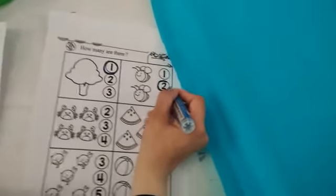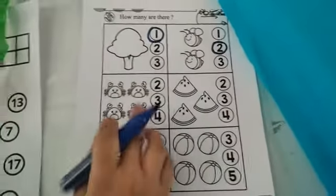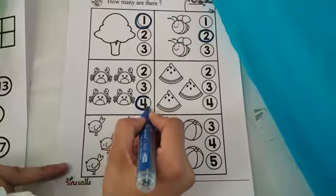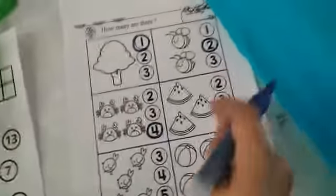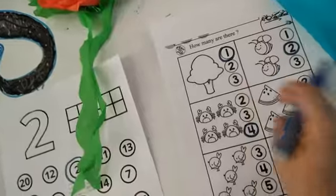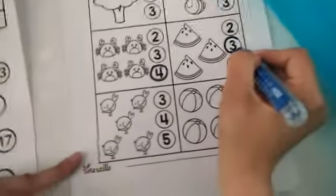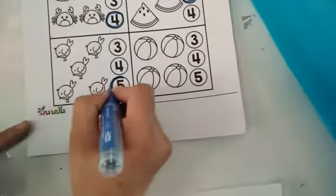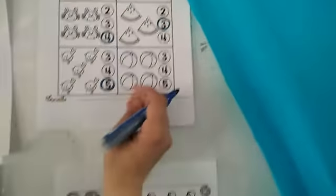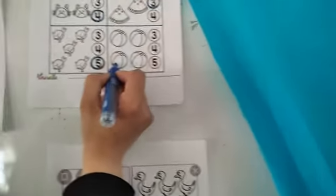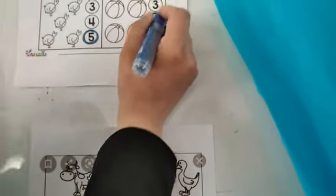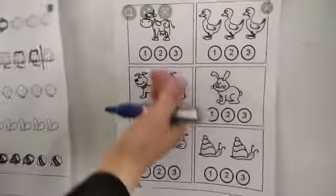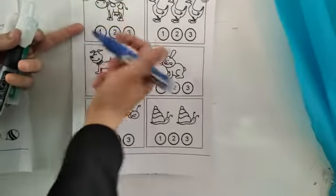This is number 2. We put a circle about number 4. This is a watermelon — we have three watermelons. These are birds — we have one, two, three, four, and five birds.